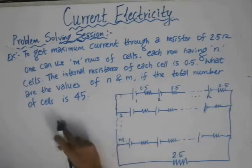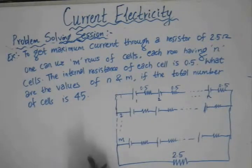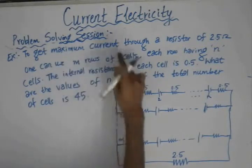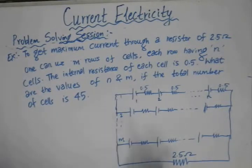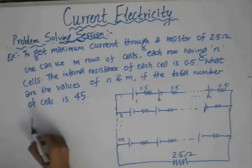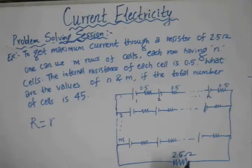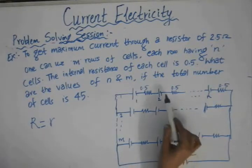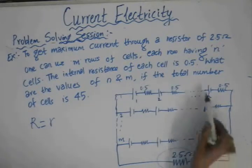We have been given that the total number of cells present is 45. We need to determine the values of N and M to get the maximum current through the external resistance of 2.5 Ohm. As we have seen in the previous example, in order to get the maximum current or the maximum power delivered to a load, the external resistance value must be equal to the total internal resistance of the circuit.